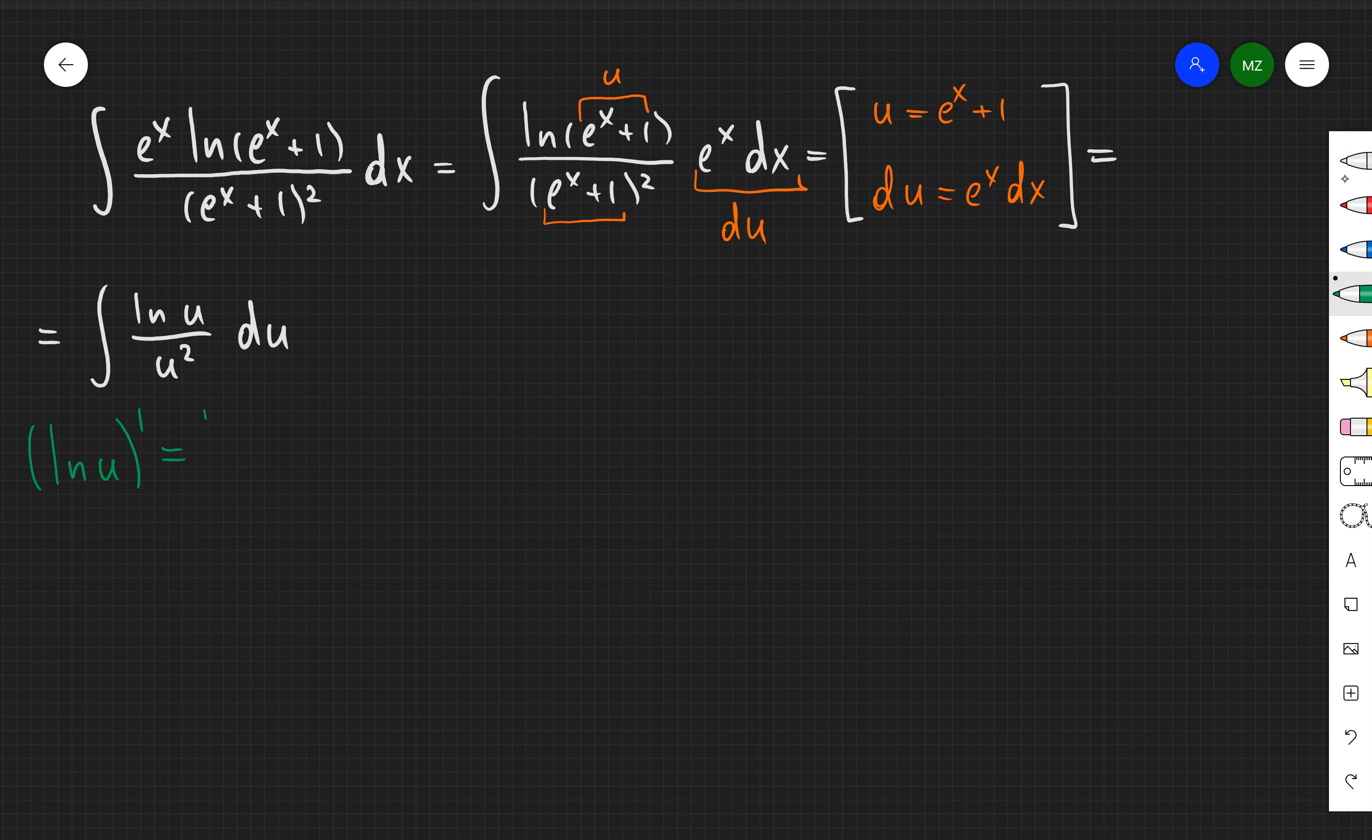Then observe that derivative of ln is just one over u. Or if I'm going to rearrange my integral I'm going to have ln u over u times du over u.